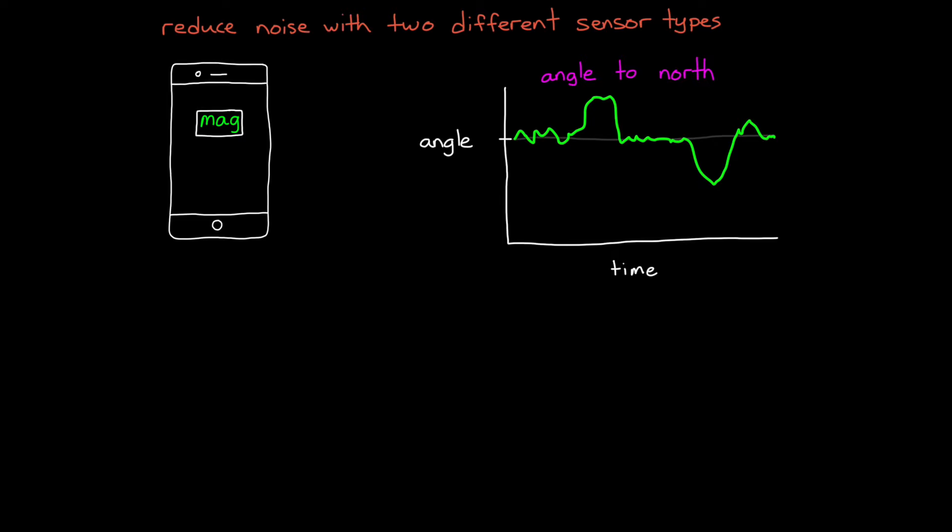And if we want to reduce that noise, then we may be tempted to add a second magnetometer. However, at least some contribution of noise is coming from the moving magnetic fields created by the electronics within the phone itself. This means that every magnetometer will be affected by this correlated noise source, and so averaging the sensors won't remove it.